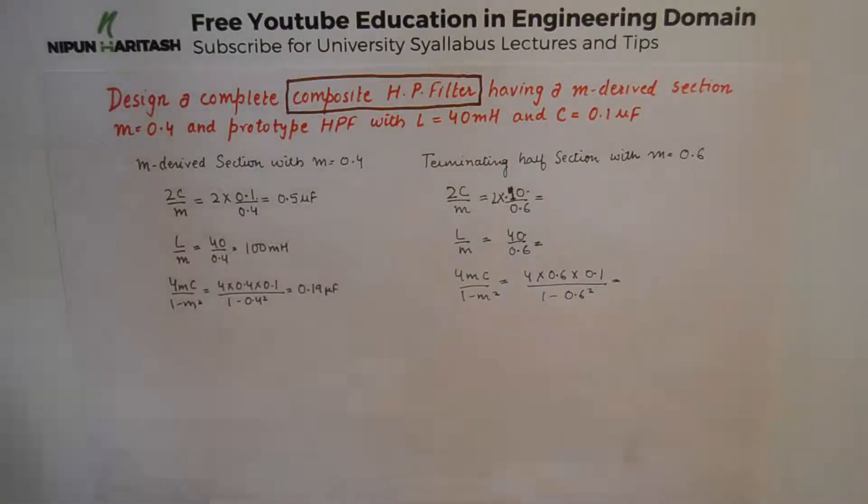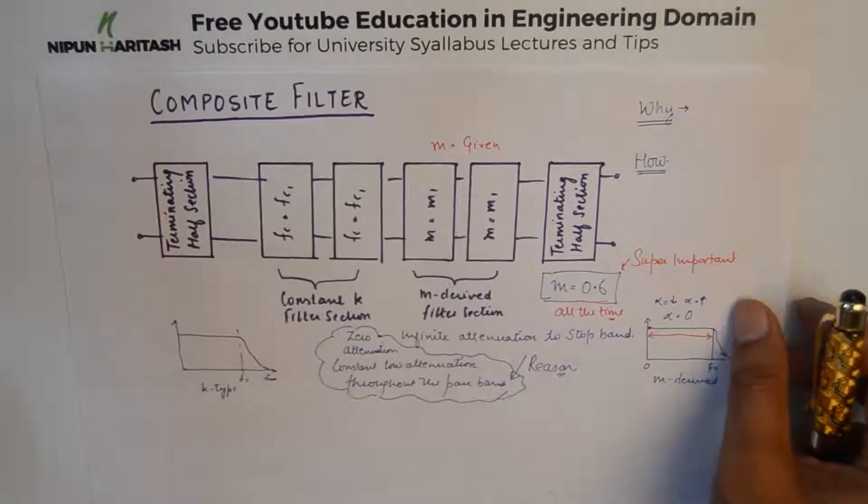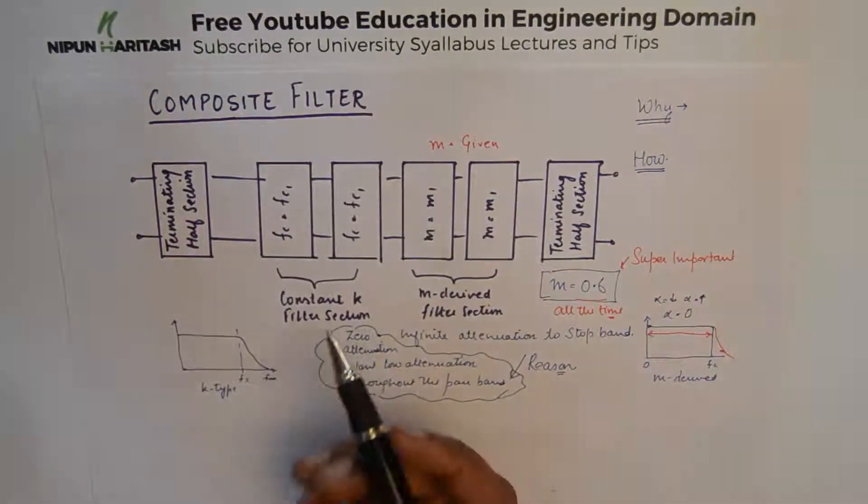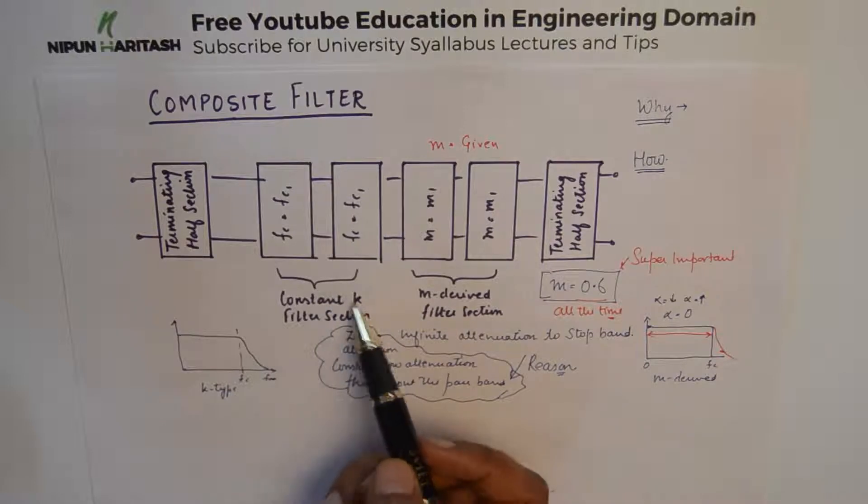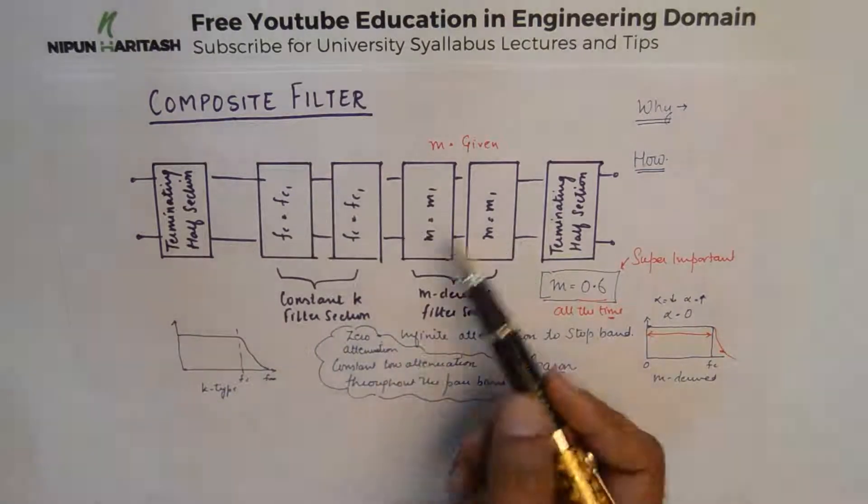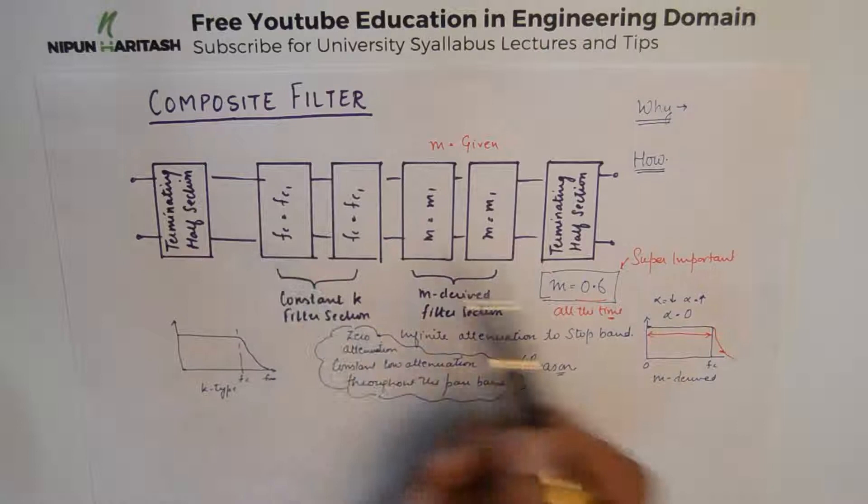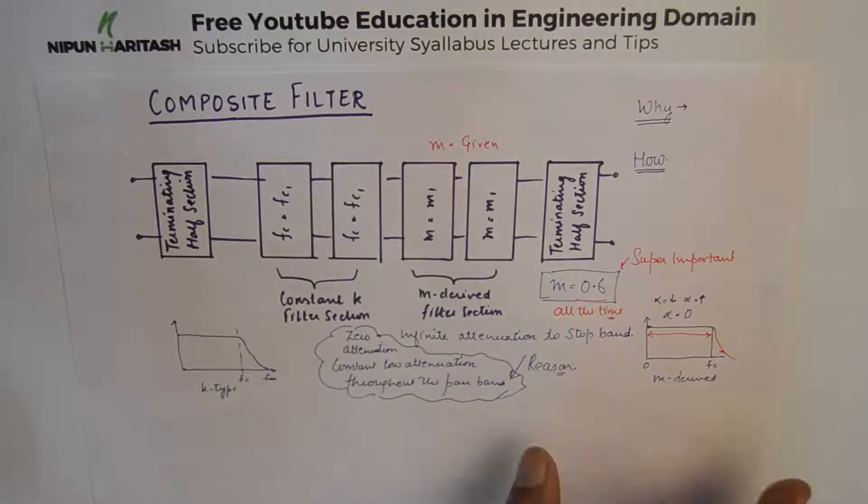Let me recapitulate that a composite filter has basically three sections: one is the constant K filter section, the other is the M derived filter section, and the third is the terminating sections.